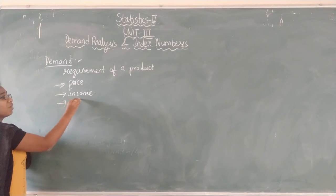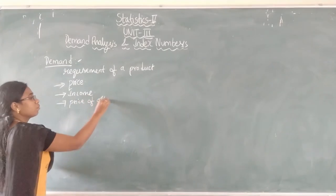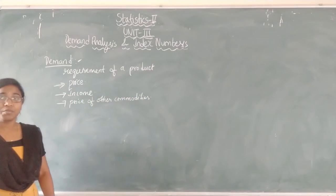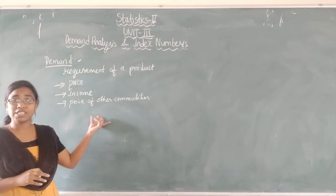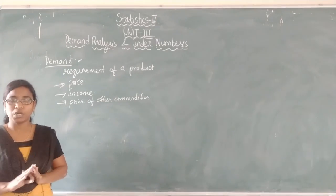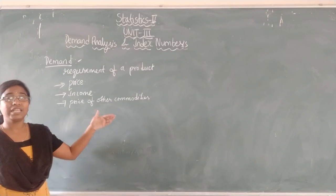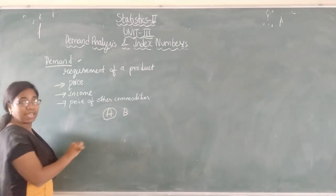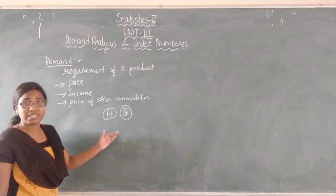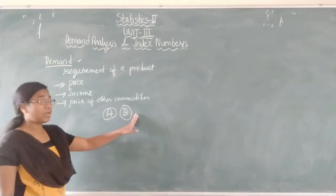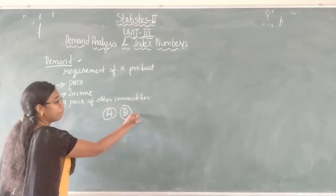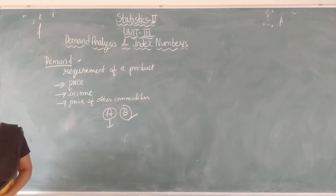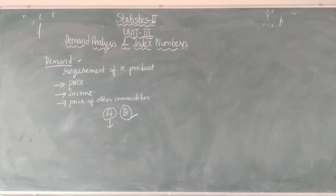The price of other commodities also affects demand. Whenever you are going to buy something, you will compare. If you have two products A and B, you want to buy A, but comparatively B's price is less and both have the same features, so you will buy B. Obviously that causes a decrease in demand for A. So the price of other commodities also affects the demand.